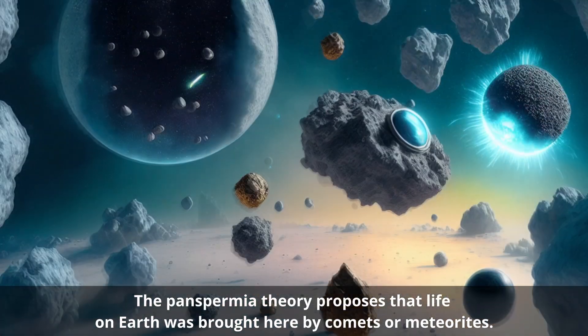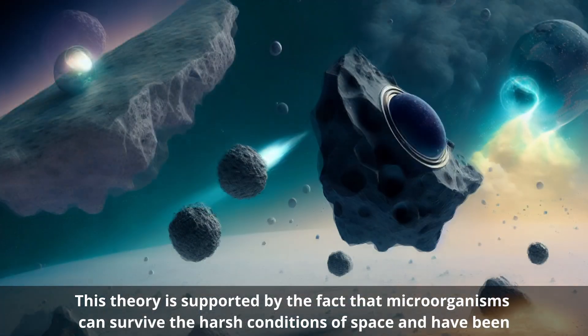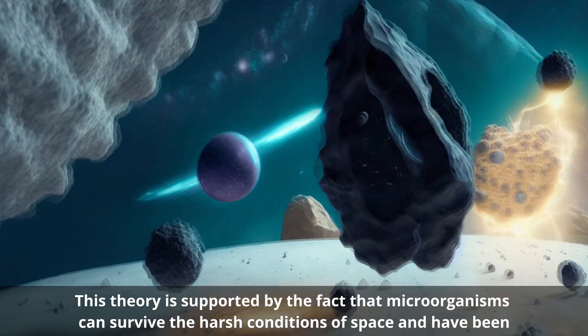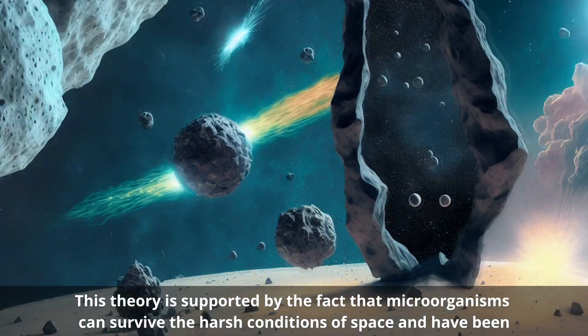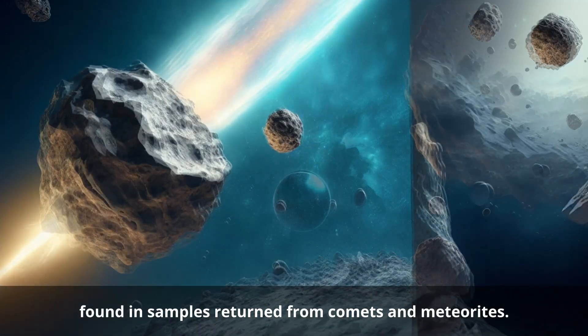The panspermia theory proposes that life on Earth was brought here by comets or meteorites. This theory is supported by the fact that microorganisms can survive the harsh conditions of space and have been found in samples returned from comets and meteorites.